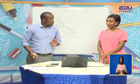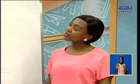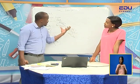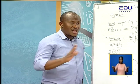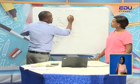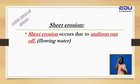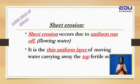So when you talk about causes, we have heavy rainfall — it carries everything away. Today we have learned about sheet erosion, its causes, and how to stop soil erosion. Sheet erosion occurs on flat land and on slope areas, on bare lands, and you don't realize it. Sheet erosion occurs due to uniform runoff — the water that flows. Sheet erosion is the thin, uniform layer of moving water carrying away the top fertile soil.